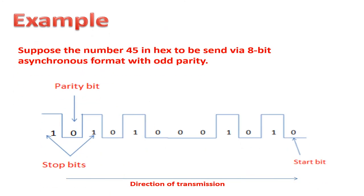Suppose the number 45 in hex is to be sent via 8-bit asynchronous format with odd parity. Then first 45 in hex is converted into binary, which is 01001001 in binary. This binary number is sent via bus. Keep in mind that the least significant bit, LSB, is sent first. The result is displayed below.